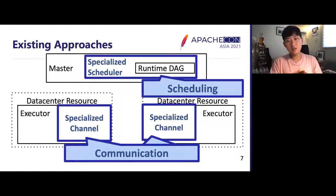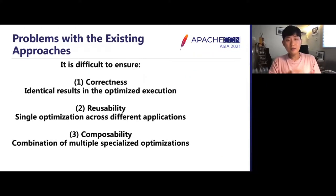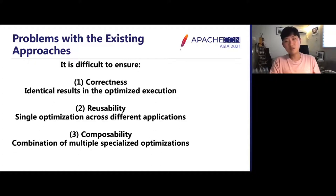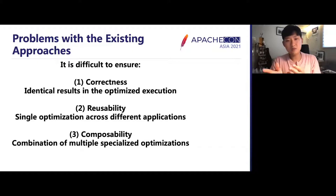What existing work has done to solve these different problems is to implement specialized schedulers and communication channels for the different specific environments with different scheduling and communication strategies. The problems with existing approaches are that it's difficult to guarantee and ensure identical results in the optimized executions. This prevents these specializations from being safely applied on different general applications and from combining multiple optimizations in cases where multiple optimizations are simultaneously required. Apache Nemo tries to solve all these problems.